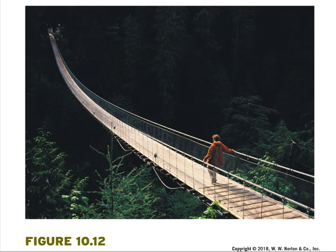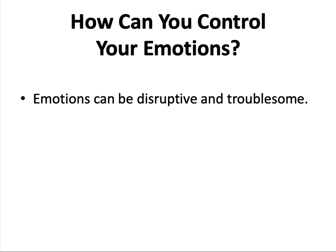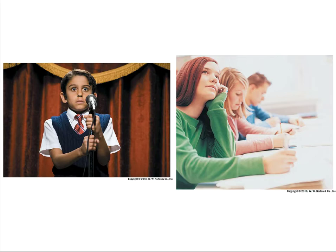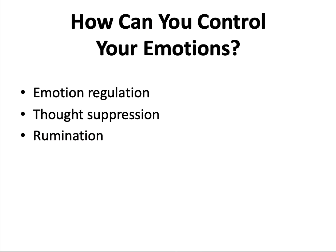Men who walked across a narrow and scary bridge over the Capilano River displayed more attraction to the female experimenter on the bridge than did men who walked across the safer bridge — an example of excitation transfer. Emotions can be disruptive and troublesome; negative feelings can prevent people from behaving as they would like to, but so can positive feelings, such as being distracted by looking forward to an exciting upcoming event.